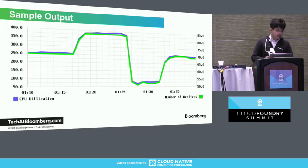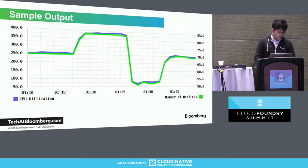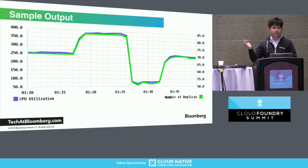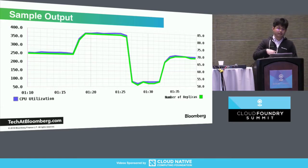Here's the example output. The green line is the number of instances and the blue line is utilization. If you double the traffic, utilization increases, so you double the number of instances. And when you reduce the traffic, utilization drops, so you reduce the number of instances.